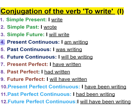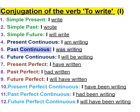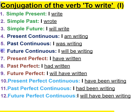Four: present continuous — I am writing. Five: past continuous — I was writing. Six: future continuous — I will be writing.